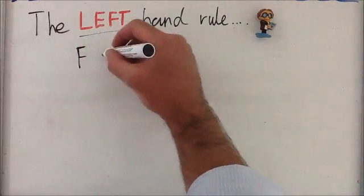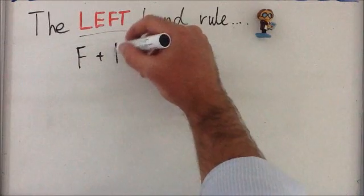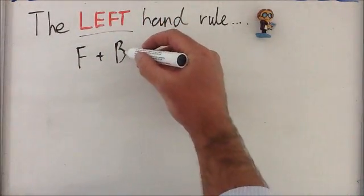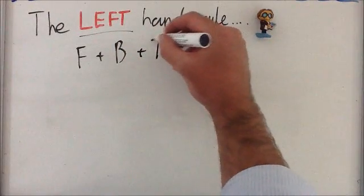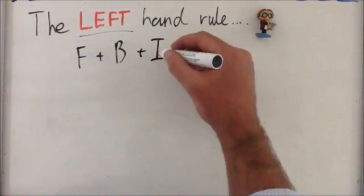Electromagnets have three components. We have a force, we have a magnetic field which bizarrely has the symbol B, and we also have the electrical current which has the symbol I.